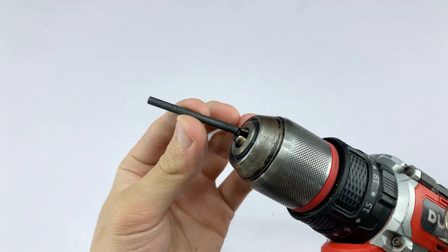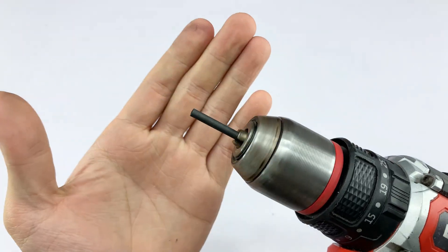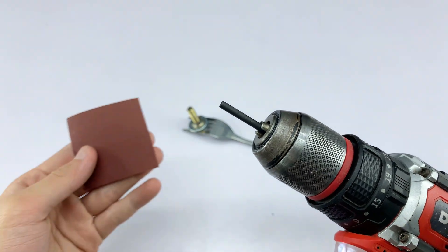I'm inserting one end of the carbon rod into the chuck of an electric drill. This allows us to easily shape it.